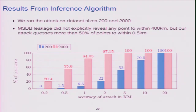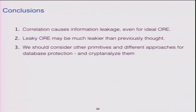We ran the attack on various dataset sizes. In all the experiments we ran, our attack guessed at least half the points to within half a kilometer — despite the raw leakage not leaking any of them to within 400 kilometers. This is the effect of guessing those high-order bits to improve accuracy. To wrap up: correlation should be considered very carefully if you're going to deploy order-revealing encryption. Leaky ORE might be even leakier on your data than on random data.